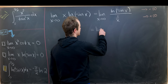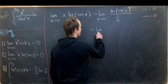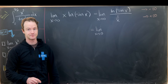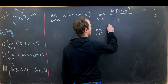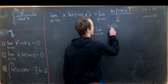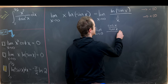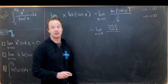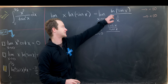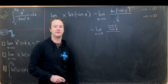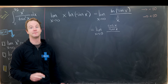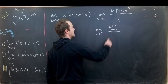Let's take the derivative of the numerator and the derivative of the denominator. The derivative of ln(sin x) gives cos(x)/sin(x) — by the chain rule, sin(x) goes downstairs from differentiating the natural log, and the derivative of sin is cos.